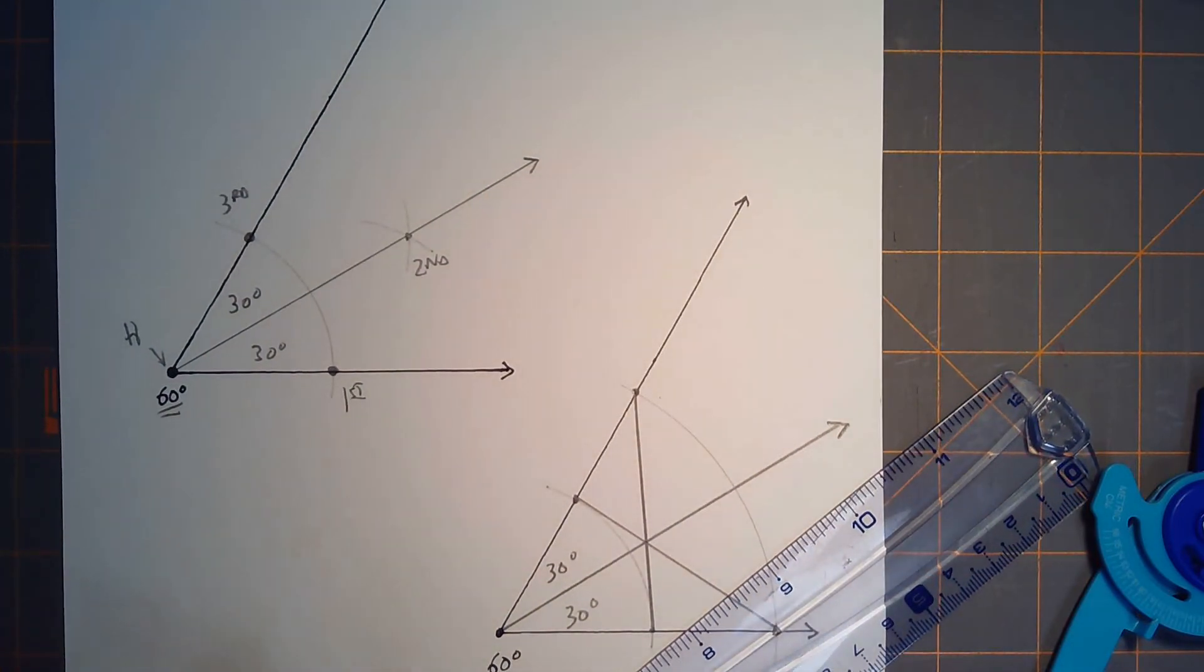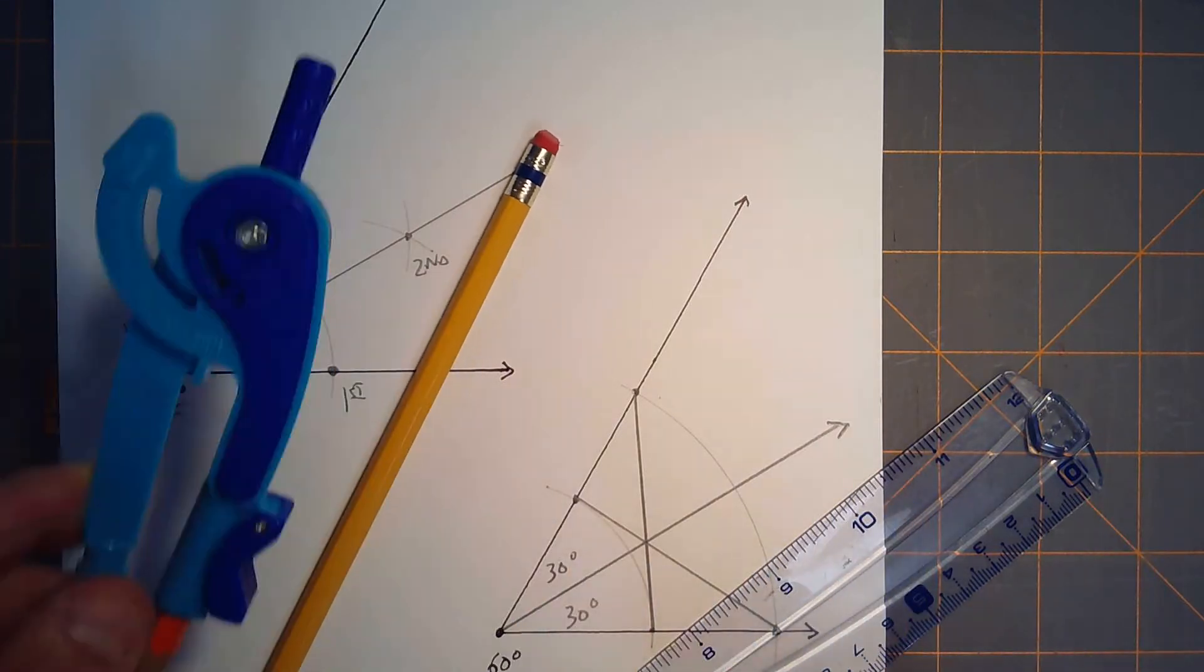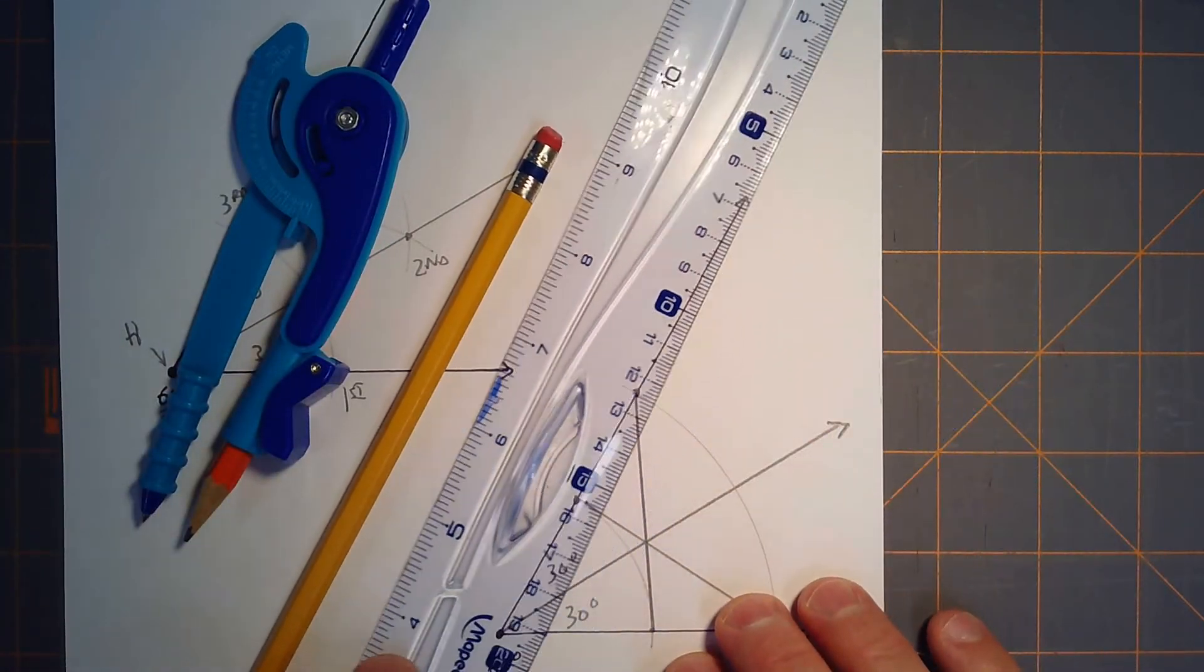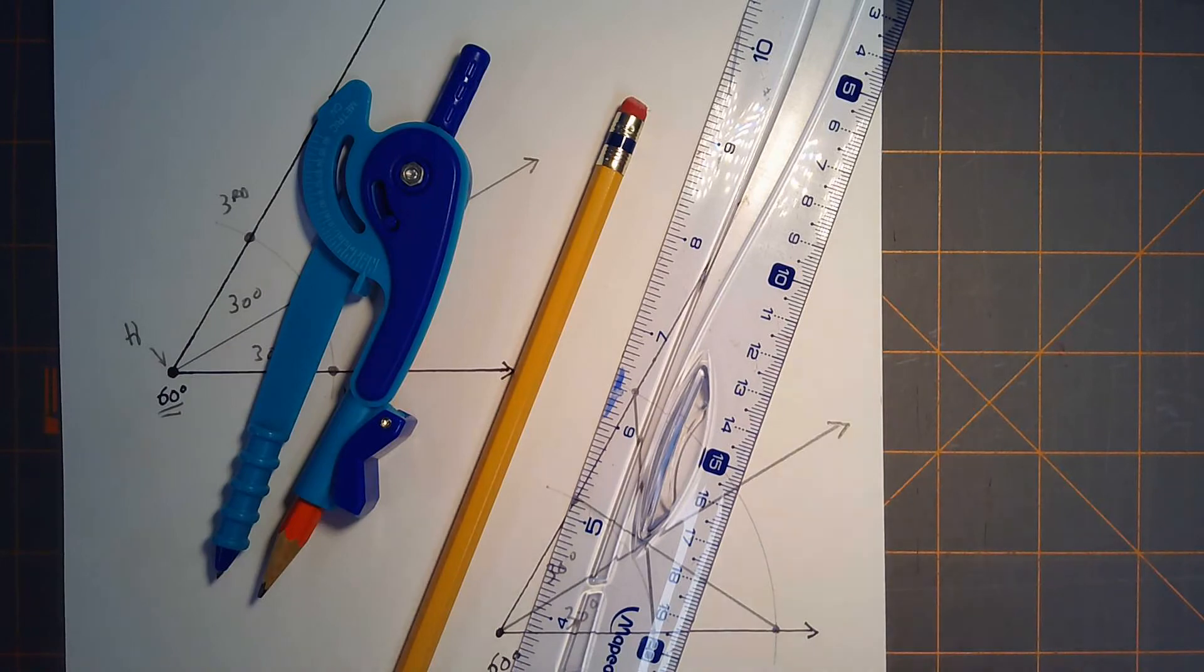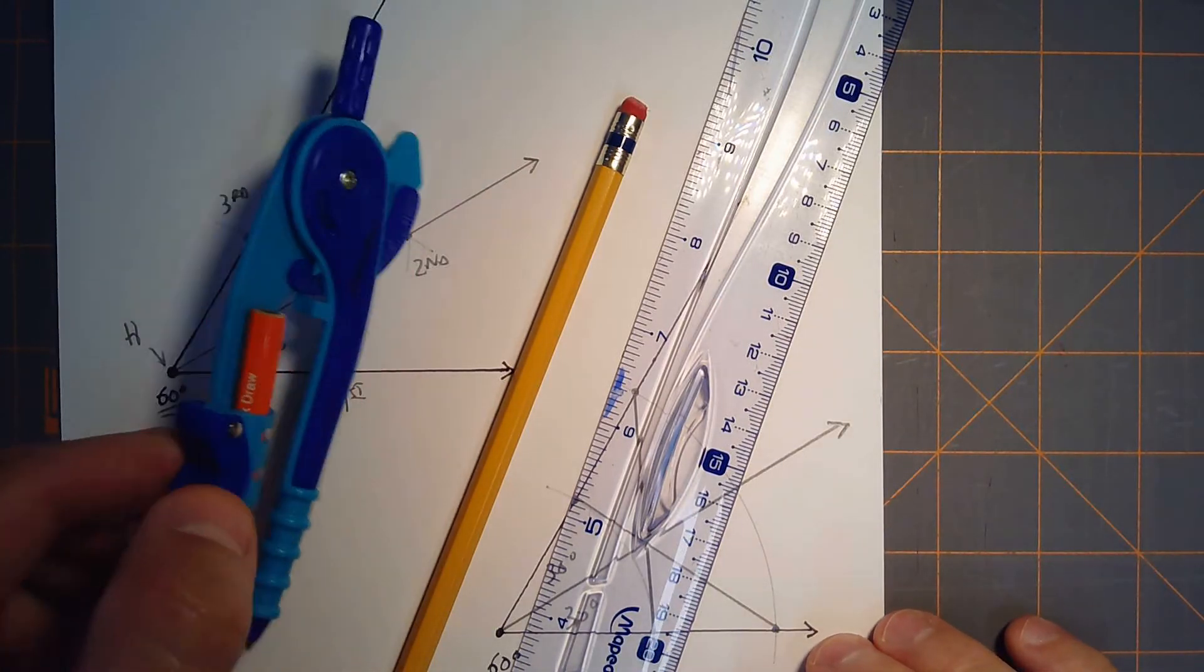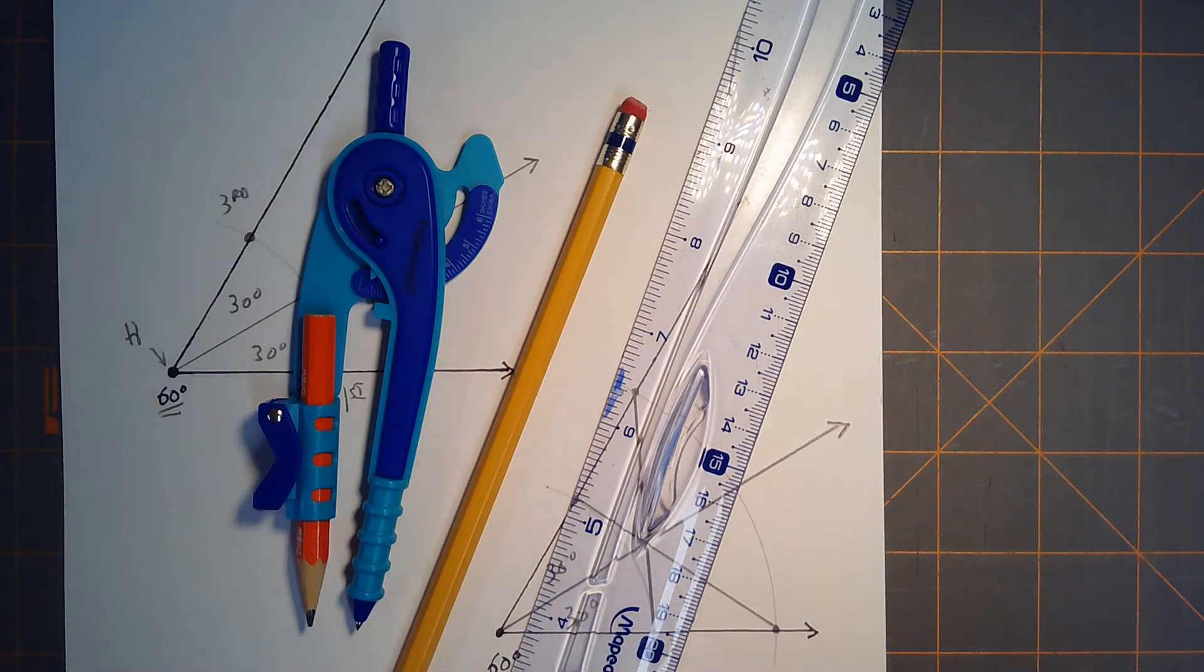There have been a number of ways to possibly trisect an angle, but using a compass and straight edge, that is not possible. So a couple different tools have been created.